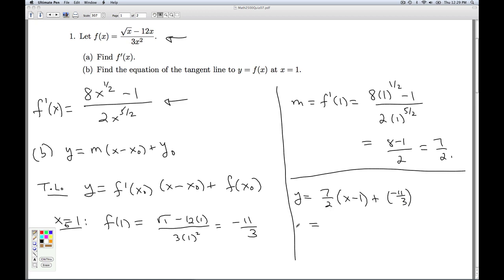We can clean this up a little bit. y equals 7/2 x. I'm going to have minus 7/2 minus 11/3. So minus 7/2 minus 11/3, give me a common denominator of 6. Multiply this by 3, negative 21. Multiply that by 2, 22. It gives me negative 43 over 6.